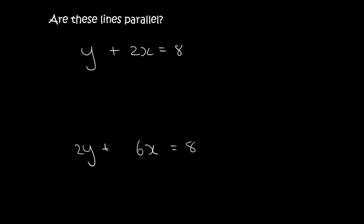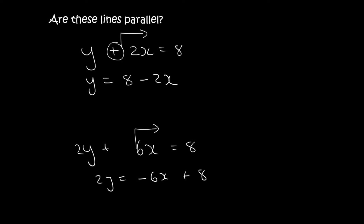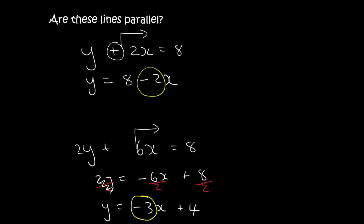Here's another pair. The top line is almost in standard form — we just need to take the 2x to the other side where it becomes negative. For the bottom equation we take the 6x over then divide everything by 2, ending up with y equals negative 3x plus 4. For the top equation the number in front of x is minus 2, and for the bottom it is minus 3. So these two lines are not parallel.